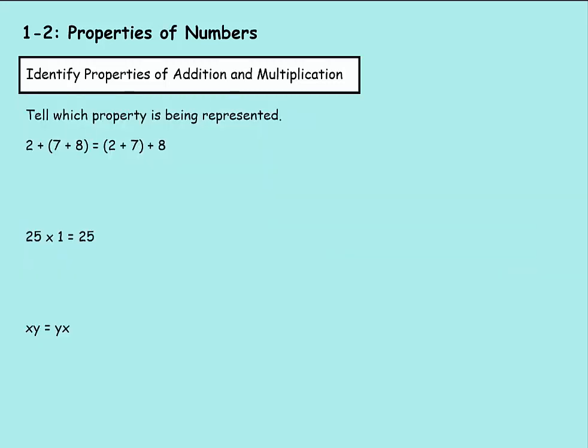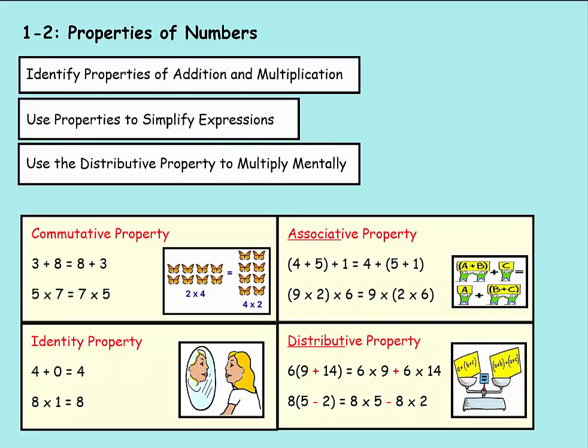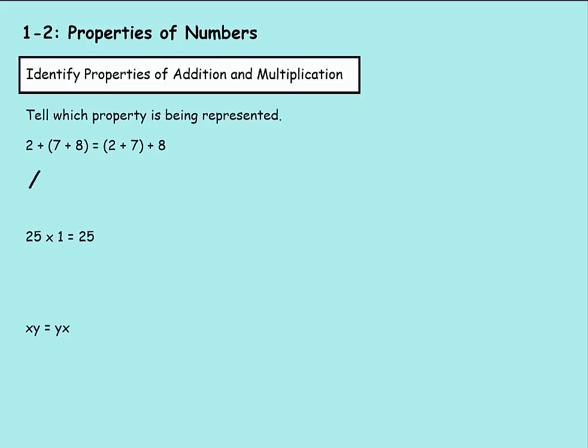So let's see if we can solve these problems. It says tell which property is being represented. Here we have 2 plus 7 and 8 in a group. Then we have 2 plus 7 in a group plus 8. If you remember back to the last slide, that would be associative property, where numbers are grouped into different groups and then added together. So that would be associative.